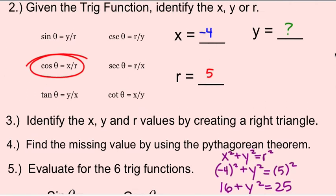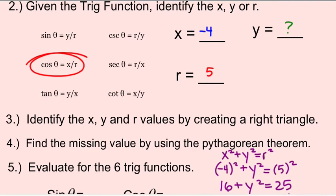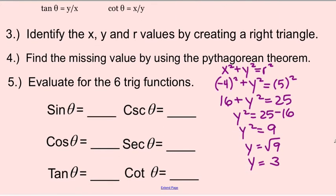Do we have a positive or a negative y? In this case, in quadrant three, you'd have a negative three. So now we know our three values — we'll go back and change y to negative three. We have our x, y, and r. So now we can go and find the sine, cosine, and tangent, cosecant, secant, and cotangent.